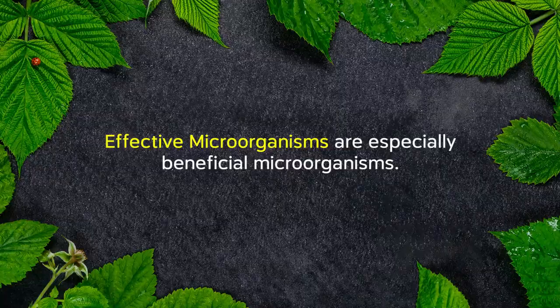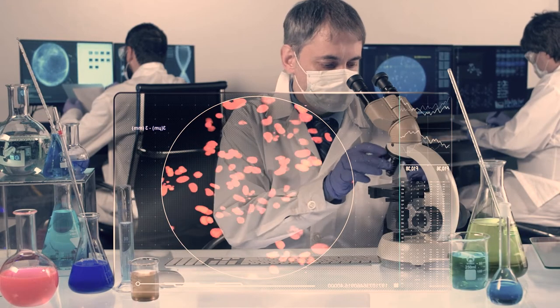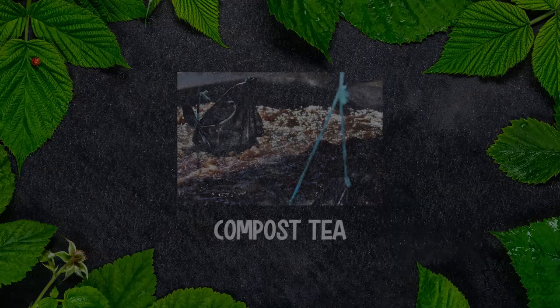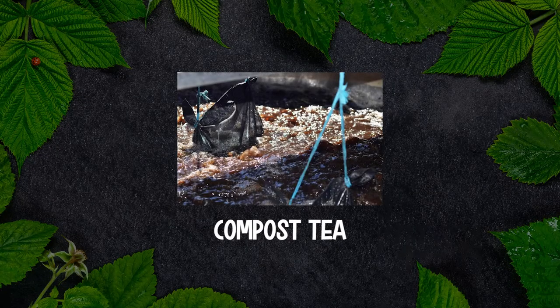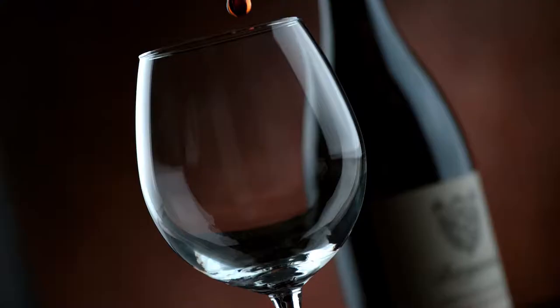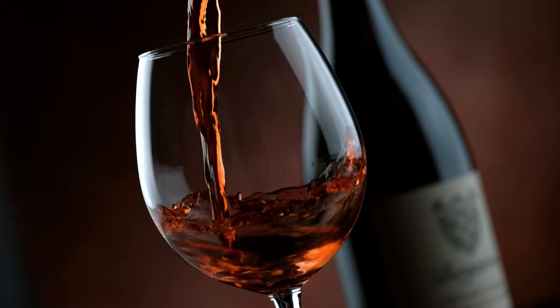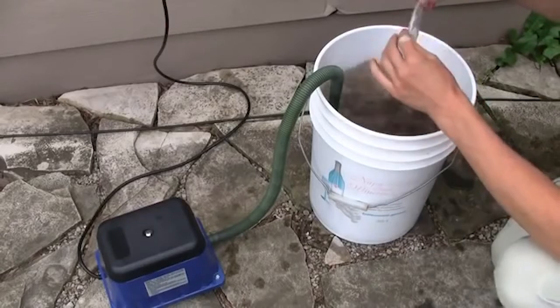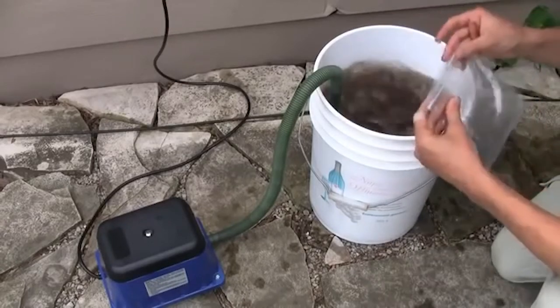A couple of reasons I really like to use EM: first, the mother culture is made in a lab under very controlled conditions, so you know you're getting a consistently good product. Compare that to compost tea, which is not as controlled. The other nice thing is that EM microbes are fermenting microbes — they can live without oxygen and can be stored for years, kind of like wine. Compost tea, by contrast, you want to use within a day of it being brewed.